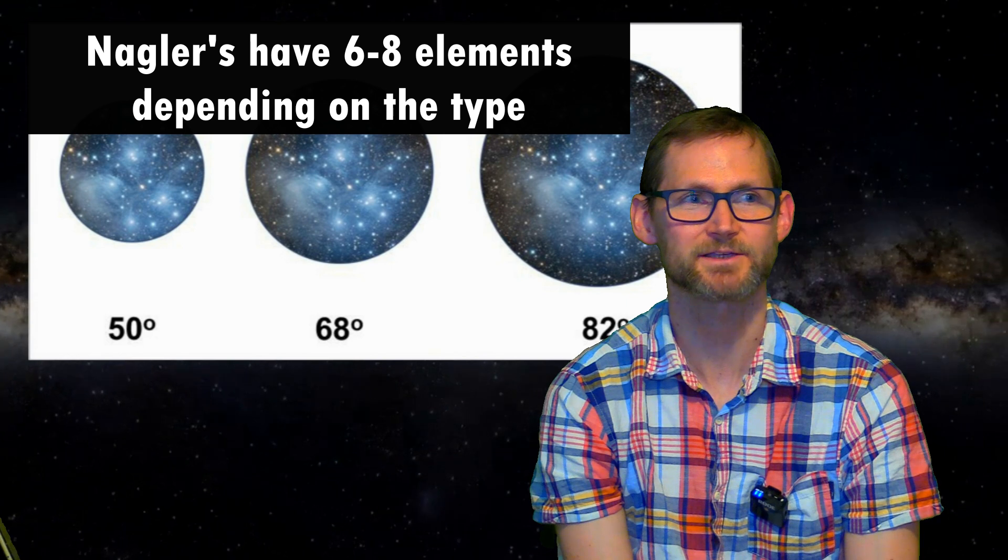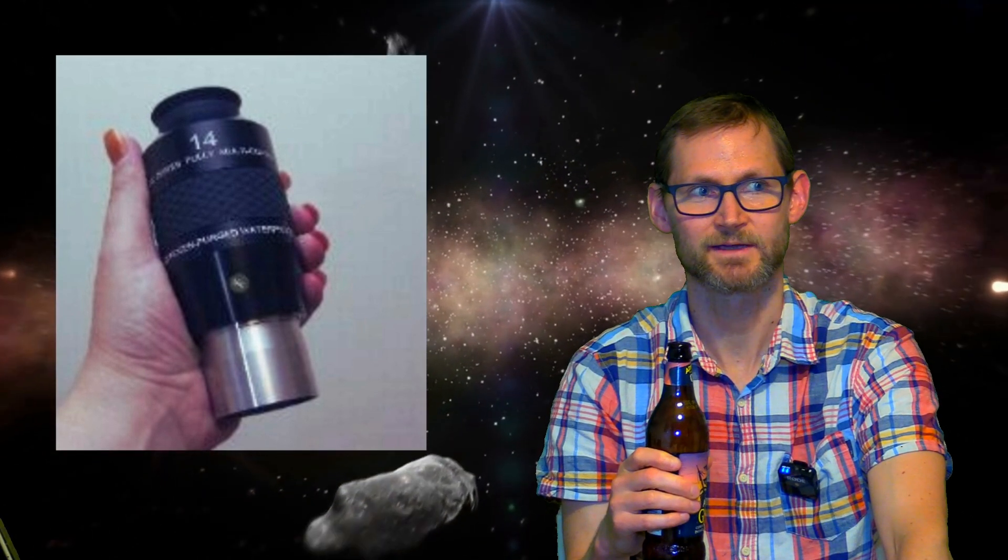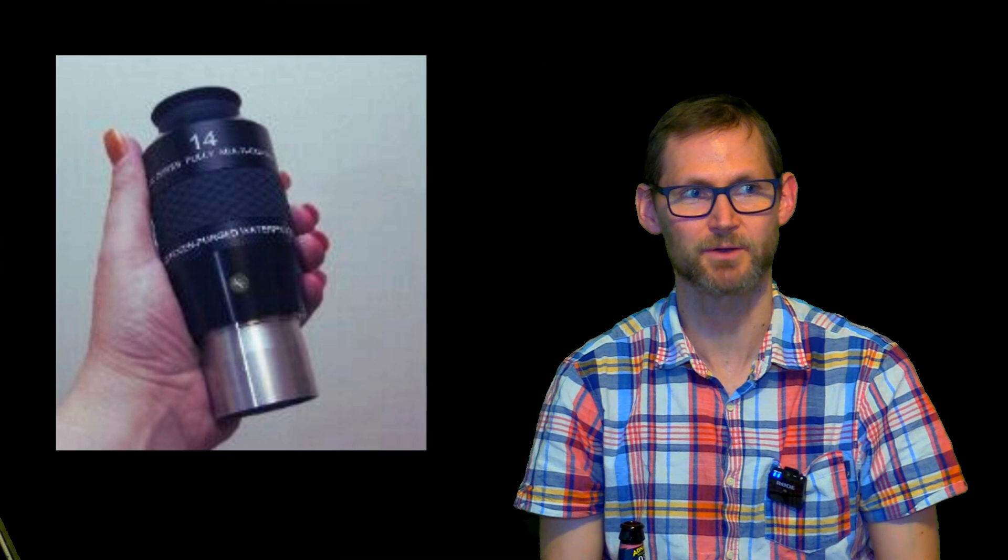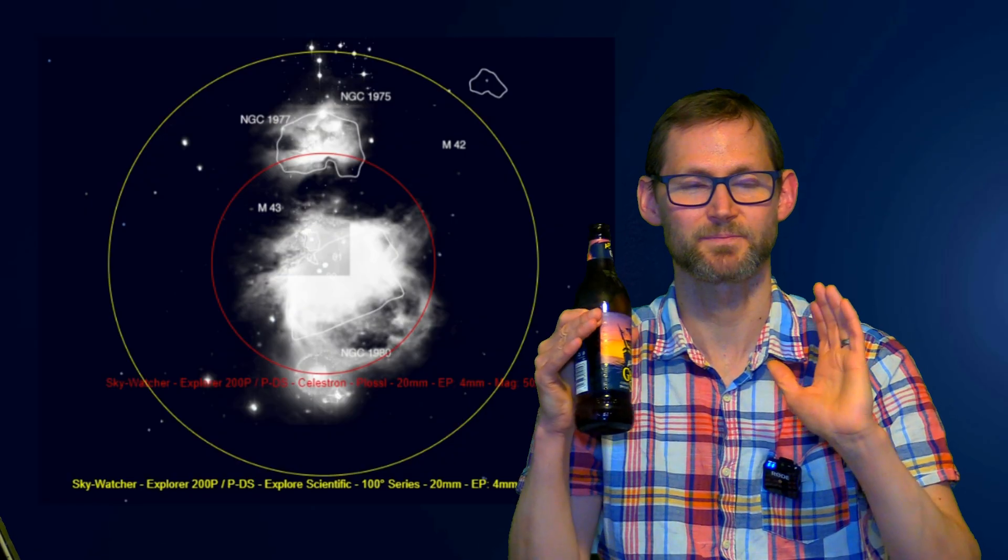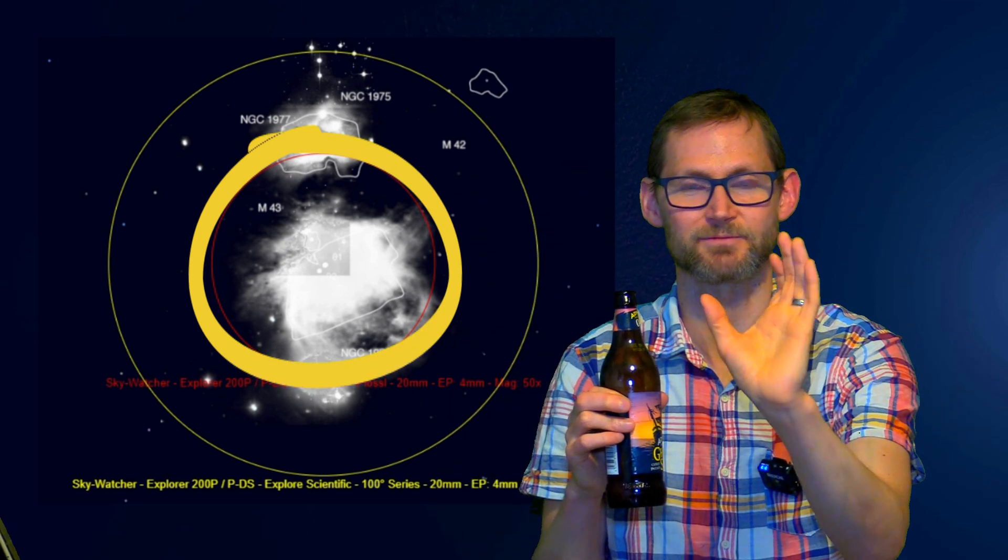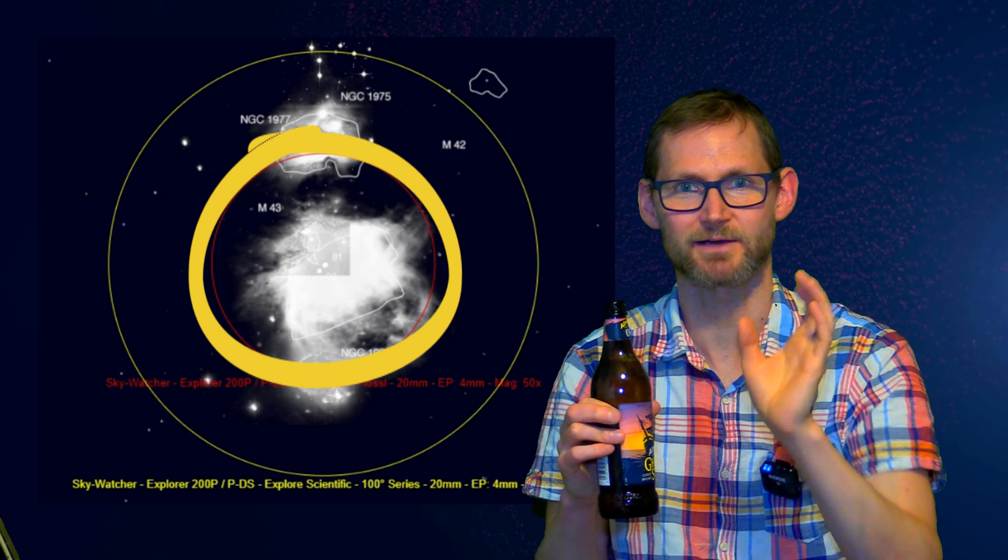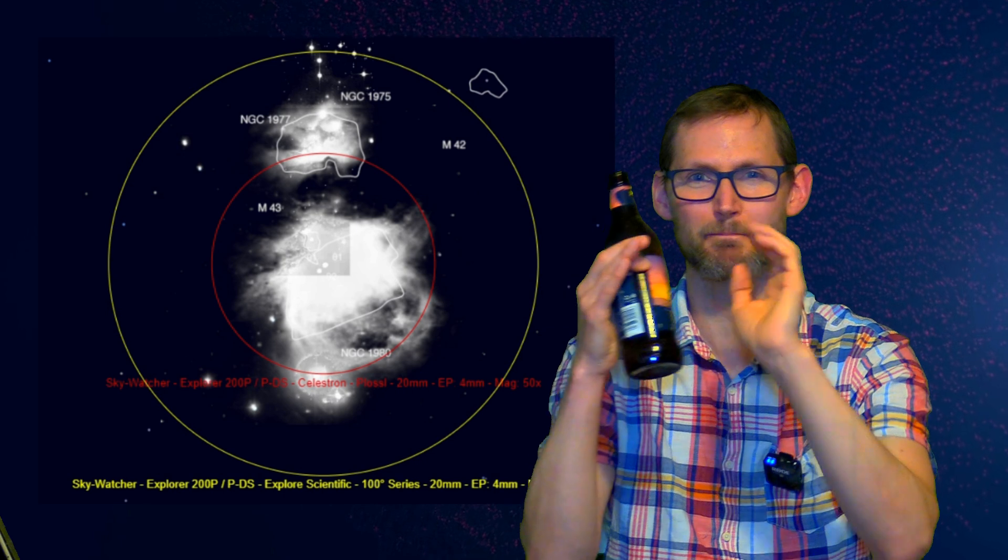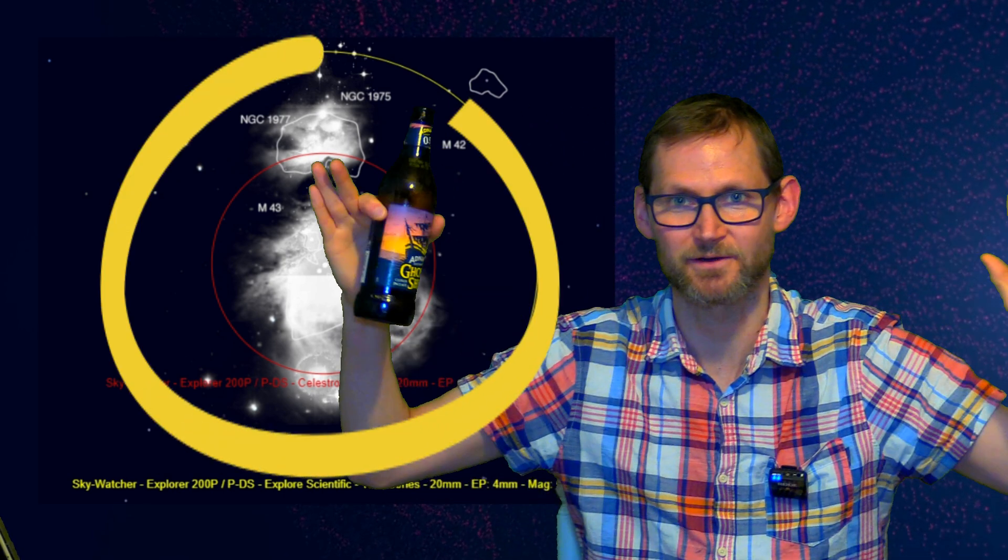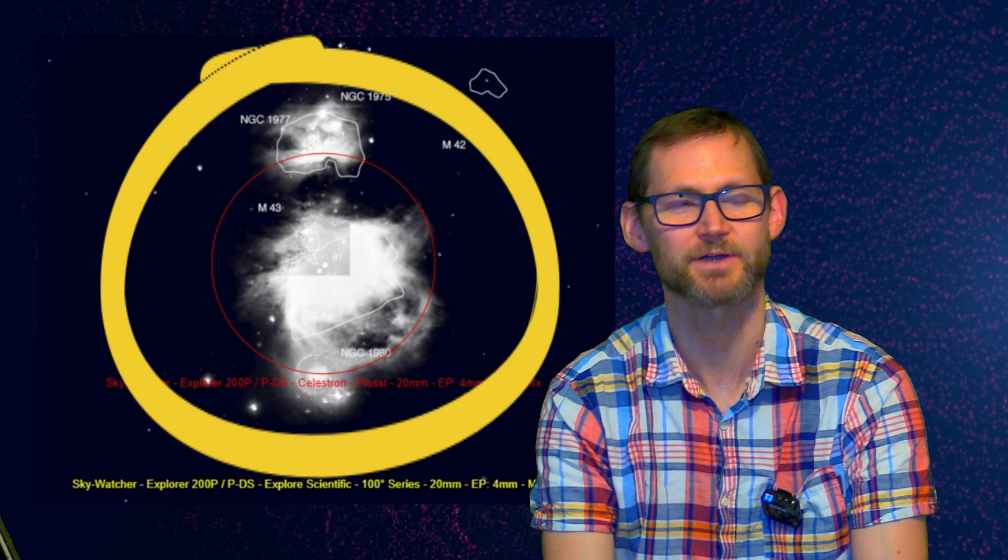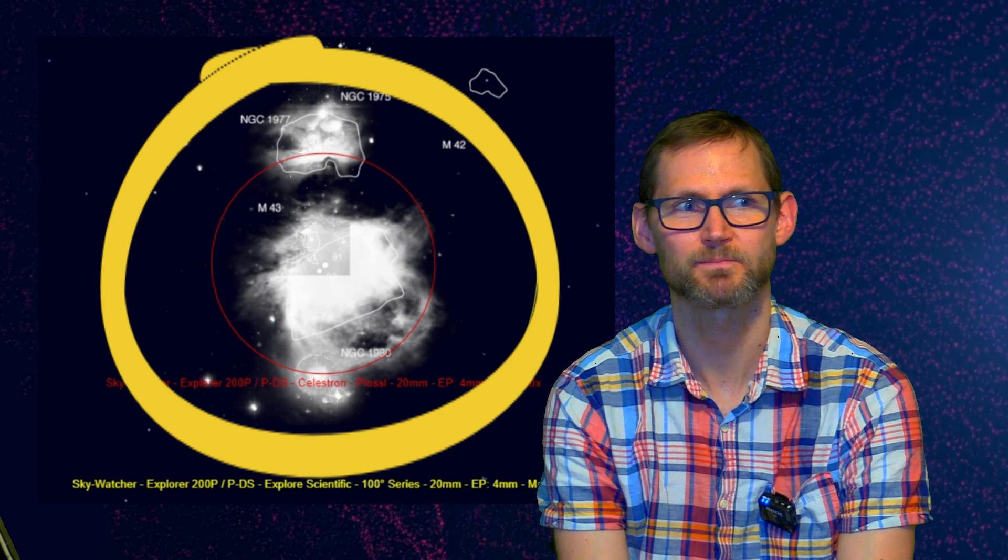I used to own a set of Explore Scientific 100 degree eyepieces that were about the size of this Ghost Ship bottle of beer, and they're massive but amazing. You could literally have quite high magnification but still have a massive field of view. If you used a Plössl with 50 degrees, you could be fairly zoomed into the trapezium stars of Orion, for example, with quite a high mag. But if you swapped it out for a 100 degree Explore Scientific, you'd have that same magnification really zoomed into the core, but then out to the sides you've got this space walk feeling where you can see the rest of the nebula in your peripheral vision. They're expensive, they're massive, but they are pretty amazing.